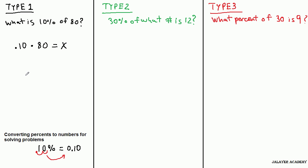So all you have to do is 10% times 80, which comes out to be 8. That's the easiest type.